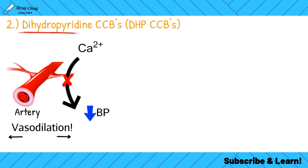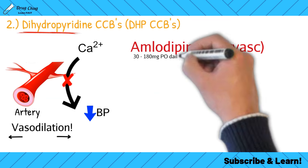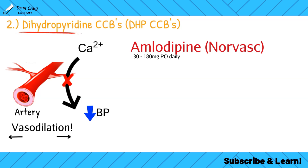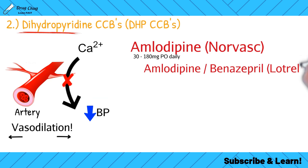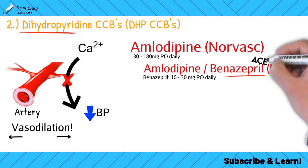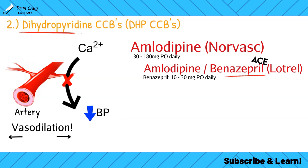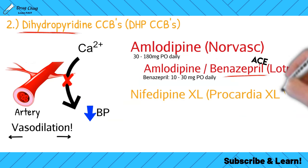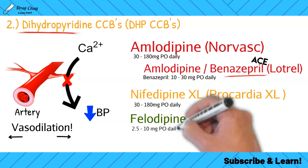The most common DHP calcium channel blocker is amlodipine, brand name Norvasc. Amlodipine also comes in a combination product called Lotrel, which contains amlodipine and benazepril — an ACE inhibitor. Another product is nifedipine XL, brand name Procardia. A mnemonic: nifedipine has the word 'knife' in it, and nifedipine cuts the heart's workload down in half.